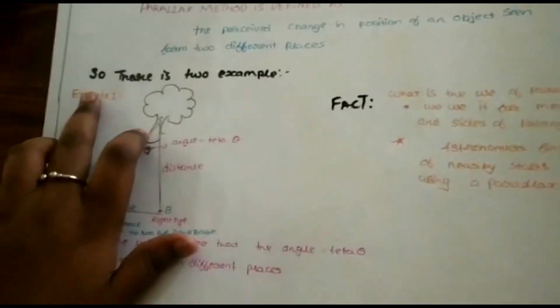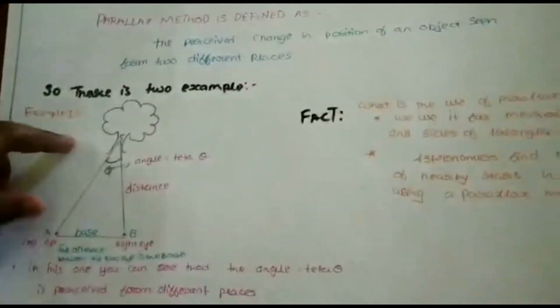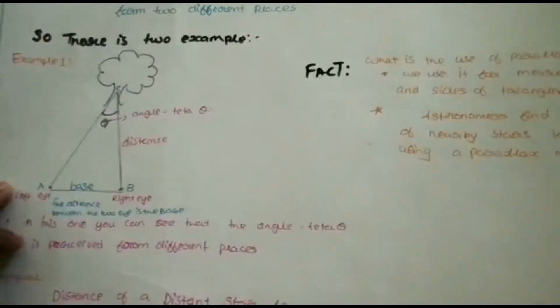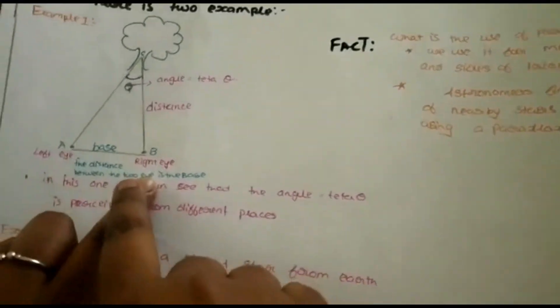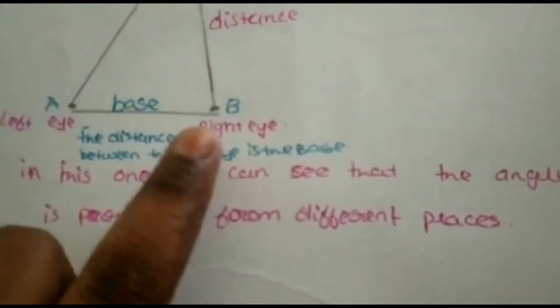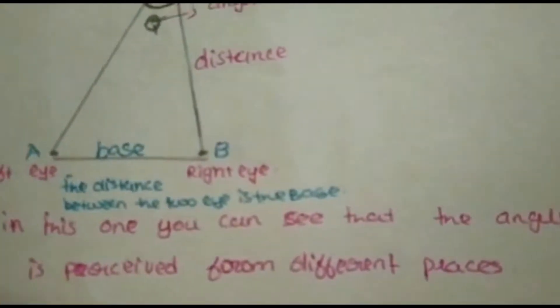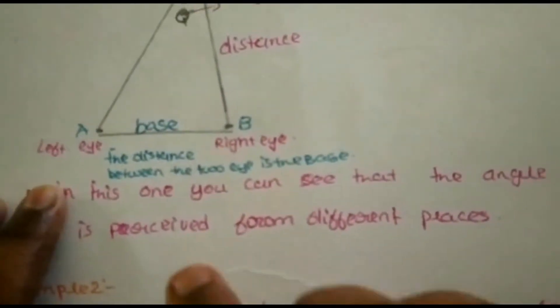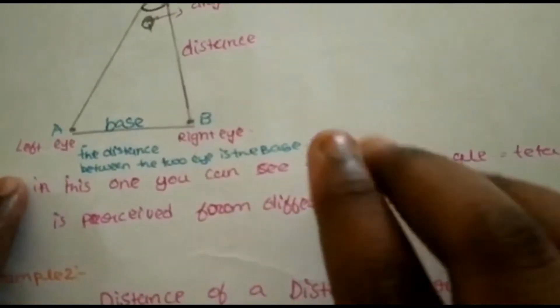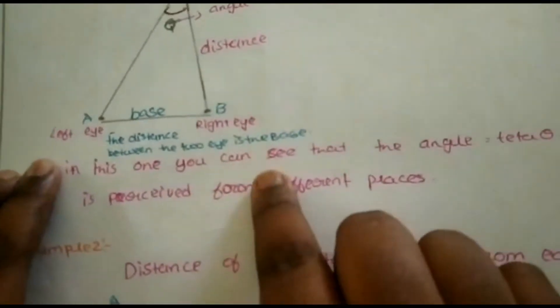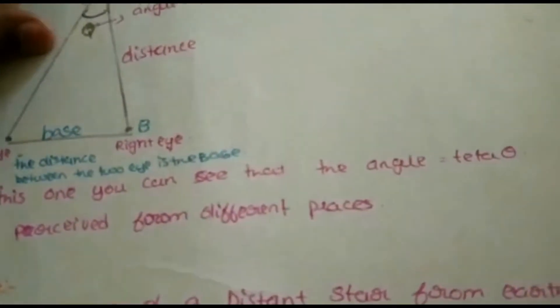Now I am going to give some examples of this method. If you close your right eye and see the tree from the left eye, and if you close the left eye and see the tree from the right eye, the tree's position will be changed.